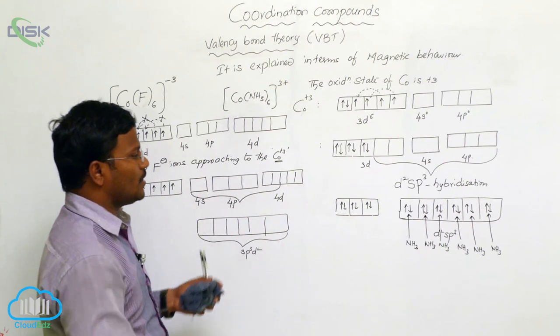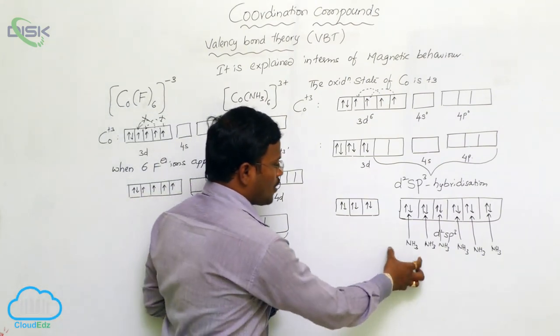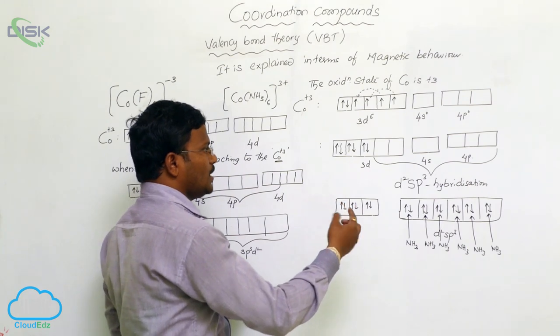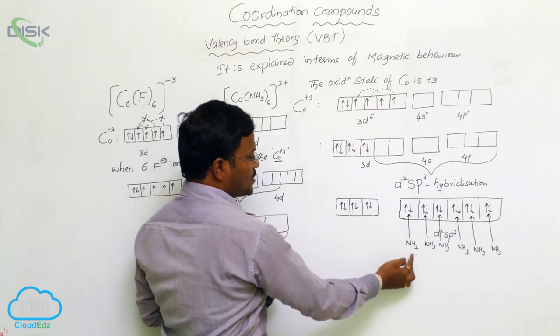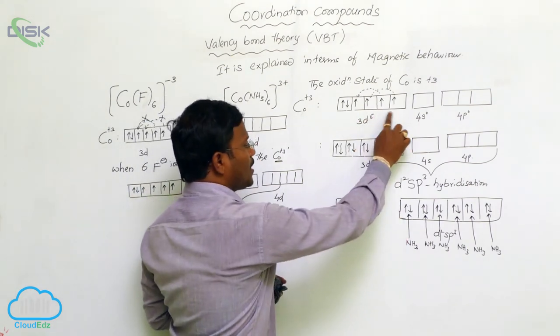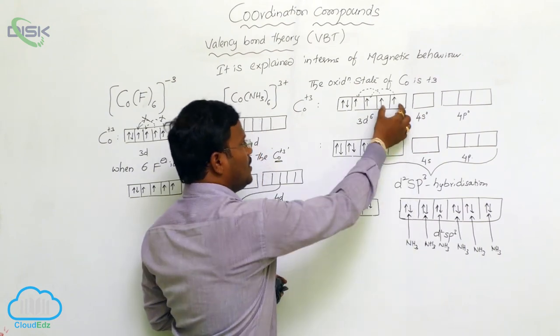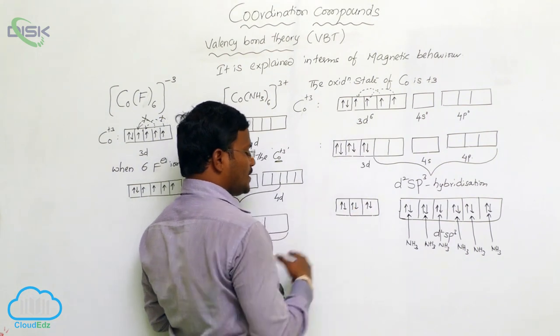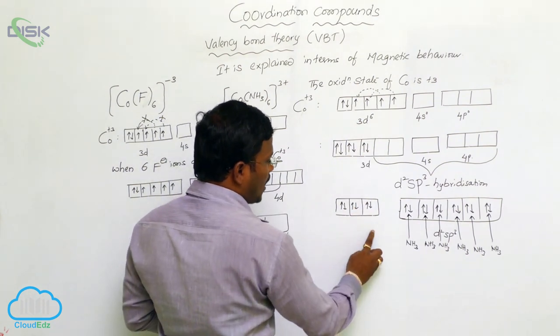Just remember in the presence of strong field ligand, while the strong ligands are going to approach here, the electron-electron repulsions takes place between the d orbital electrons and ligands and rearrangement of electrons takes place into the inner sphere, then the resulting complex are called as inner orbital complex.